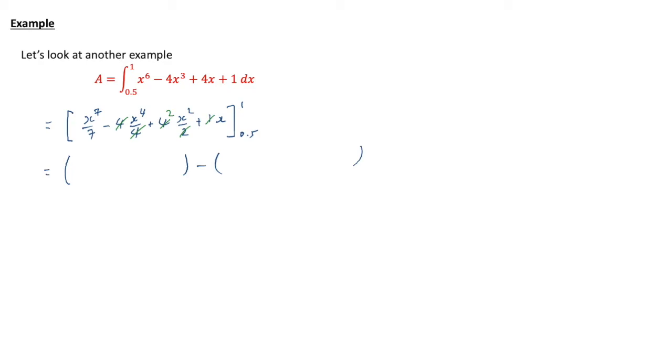When you've got long integrals, it's a good idea to put a bracket ready for putting the top value in, the 1 in this case. Take away a bracket putting the second value in, the bottom value, 0.5. It's a common mistake to mess things up with the minus signs if you're not careful. So by doing these brackets, you will save yourself bother.